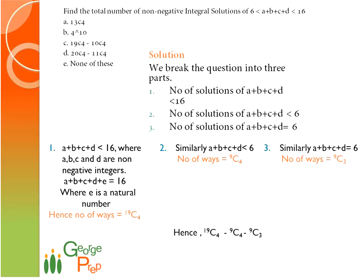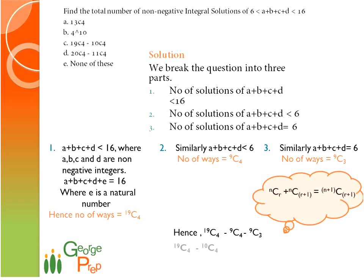When you look at the options, you do not have an option of that kind — it is slightly different. This 9C4 plus 9C3 can be clubbed using the property nCr plus nC(r+1) equals (n+1)C(r+1). So 9C4 plus 9C3 becomes 10C4. Therefore we get the answer as 19C4 minus 10C4. So option C is our answer. Hope you enjoyed it.